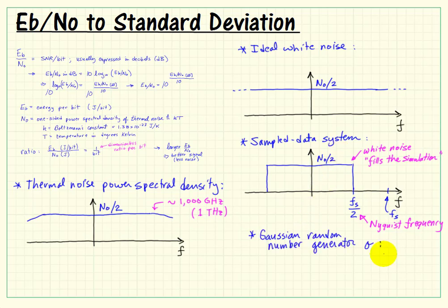And it turns out that the Gaussian random number generator can be expressed in terms of a variance, which is sigma squared, simply as this total distance, which would be f sub s, times the two-sided noise power spectral density, which would be n0 over 2.